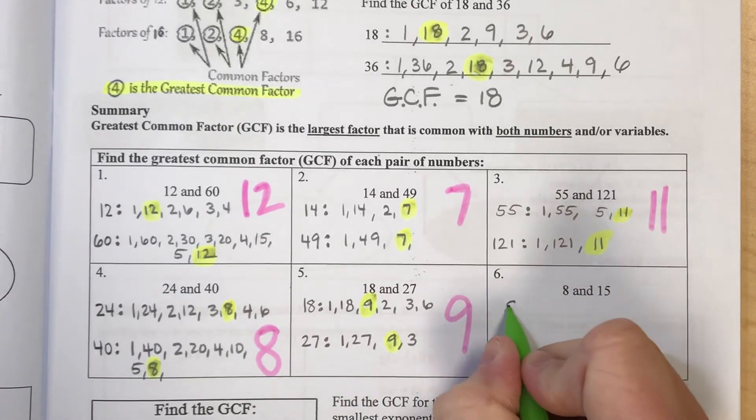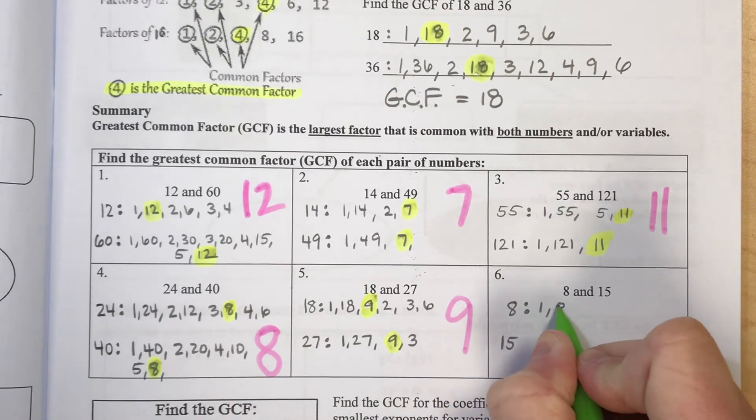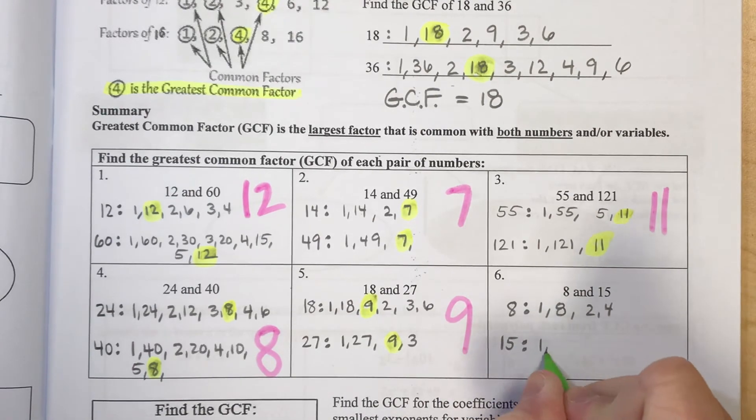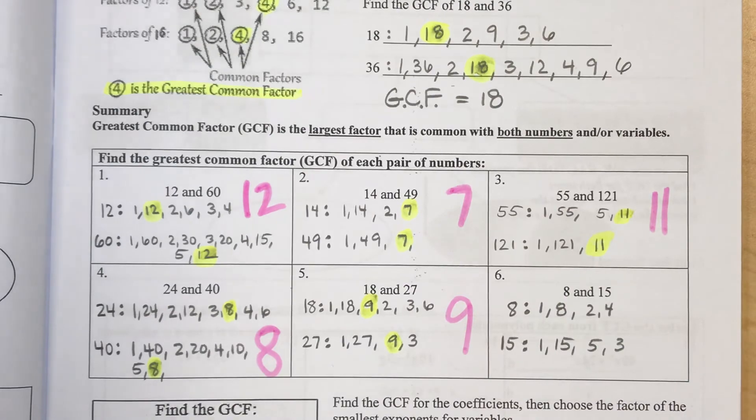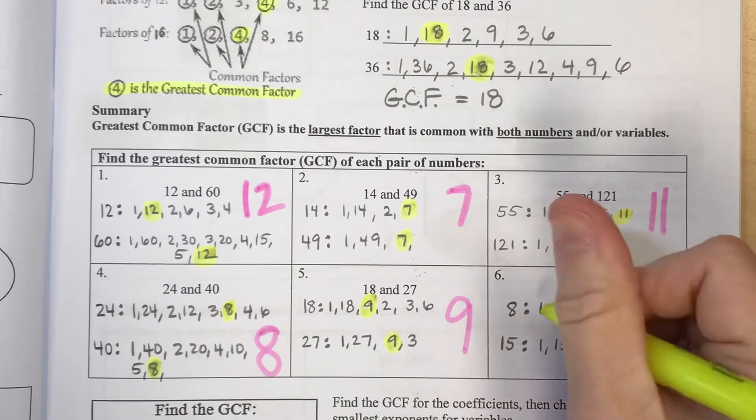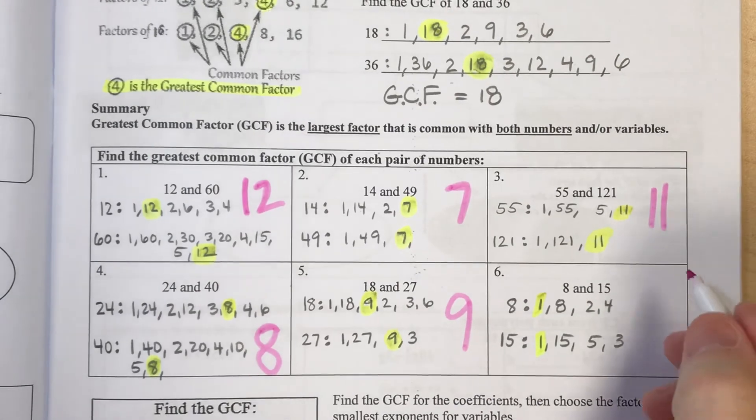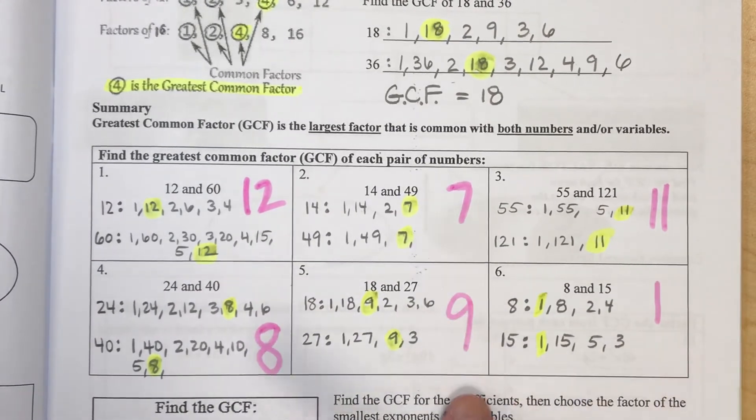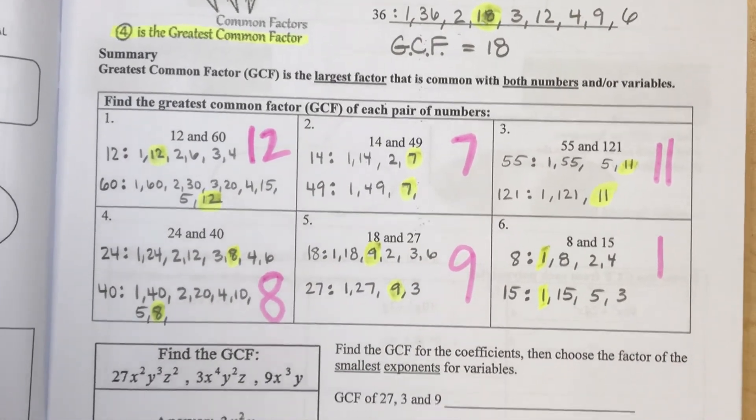And then last here, 8 and 15. What multiplies to make 8? 1 times 8, 2 times 4. And what multiplies to make 15? 1 and 15, and 5 times 3. And here, my greatest common factor, in a way, I want to say there is none. Well, there is one factor, and it's the factor of 1. So sometimes your greatest common factor will be just you pull out 1 from each of your factors. And sometimes that's how it is.